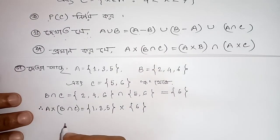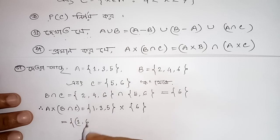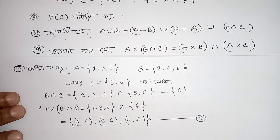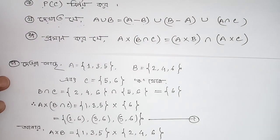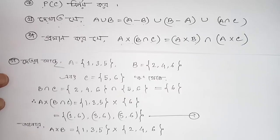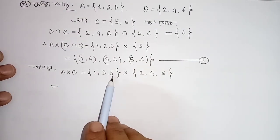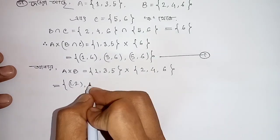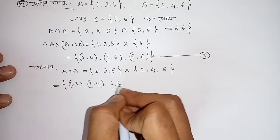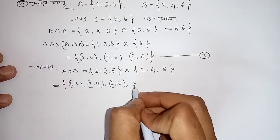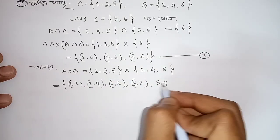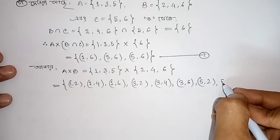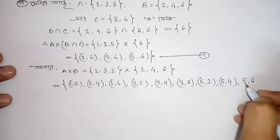A cross B (Cartesian product). First: (1,6), (3,6), (5,6). A cross B. A cross B: A = {1,3,5}, B = {2,4,6}. Pairs: (1,2), (1,4), (1,6), (3,2), (3,4), (3,6), (5,2), (5,4), (5,6).